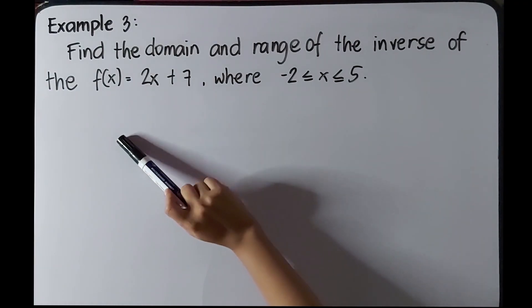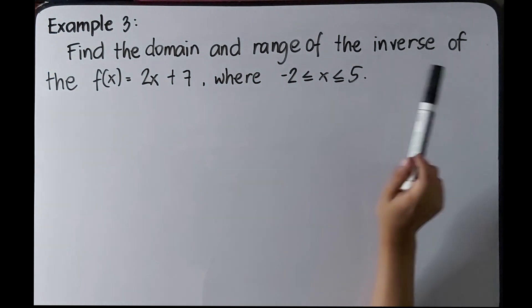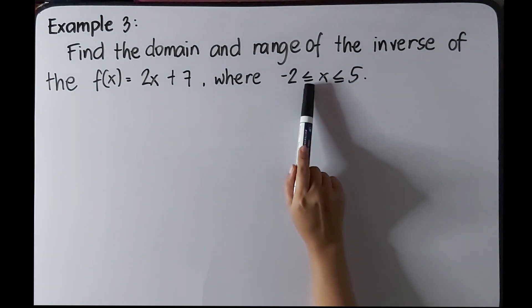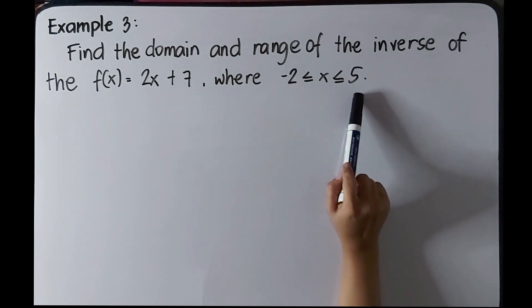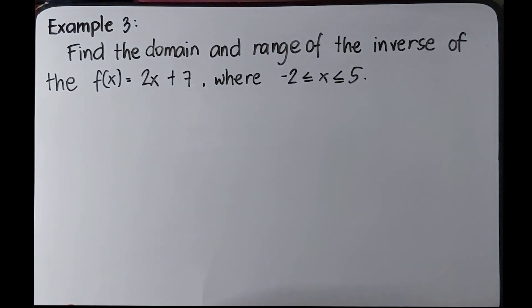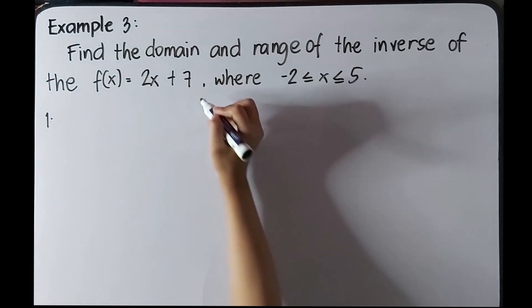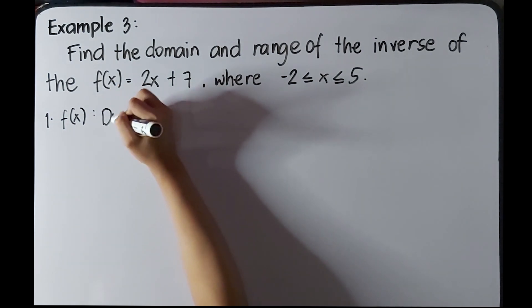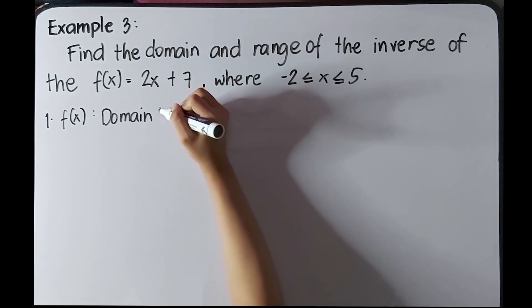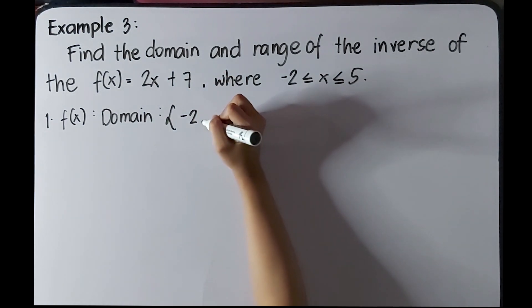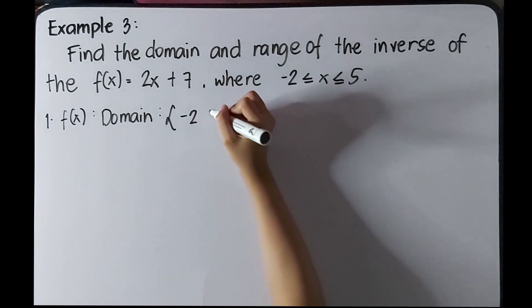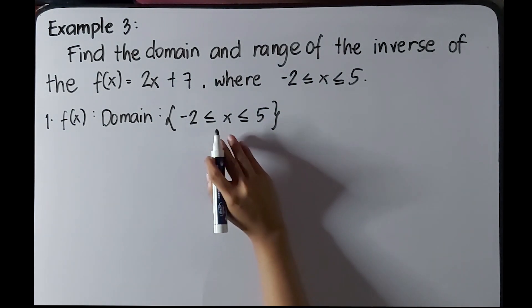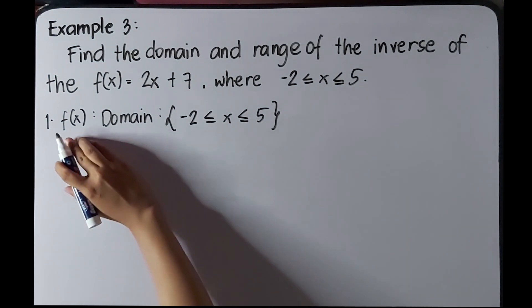For the last example: find the domain and range of the inverse of f(x) = 2x + 7, where x is greater than or equal to negative 2 and less than or equal to positive 5. The domain of this given function is x between negative 2 and positive 5, or −2 ≤ x ≤ 5. This domain is also the range of the inverse function.